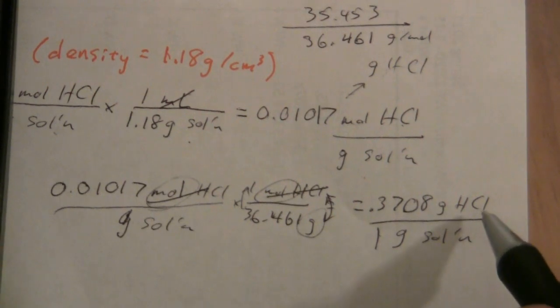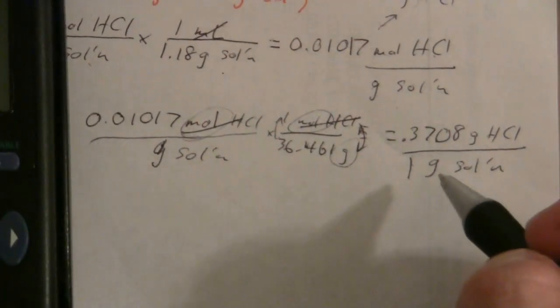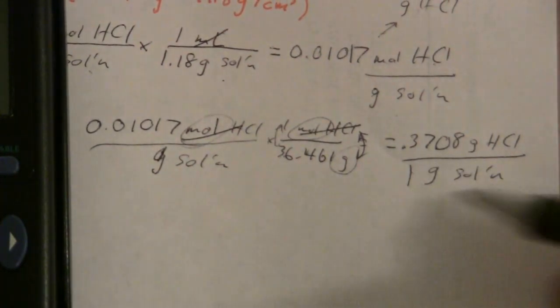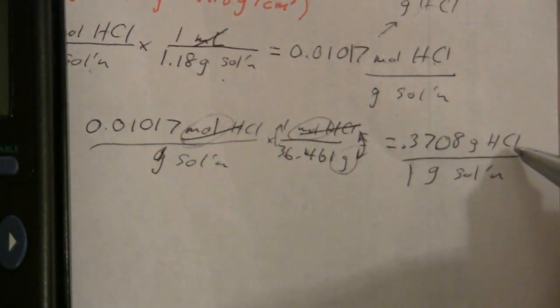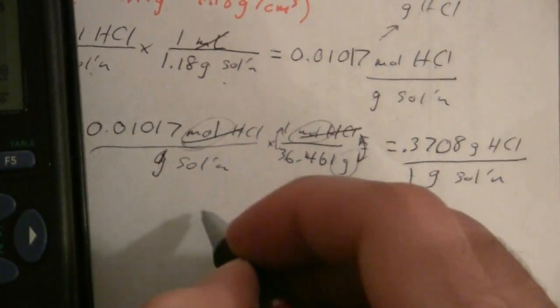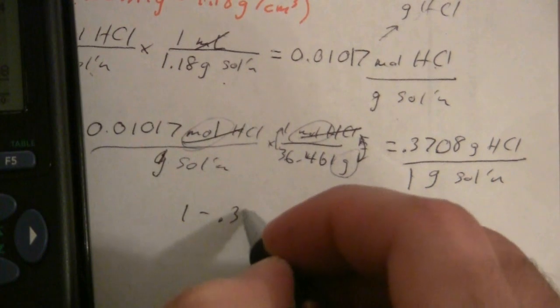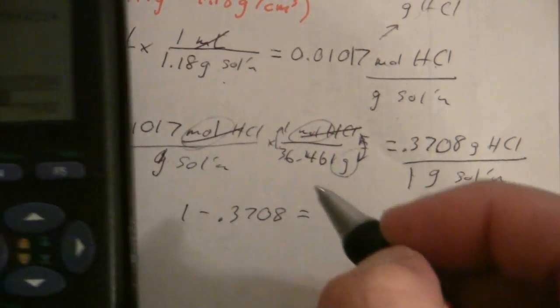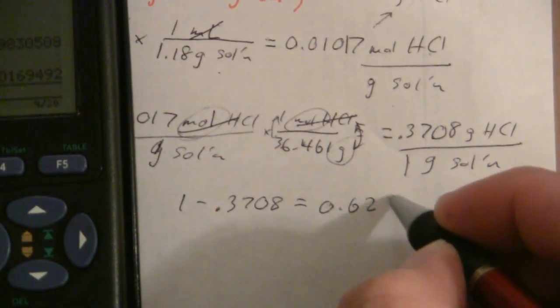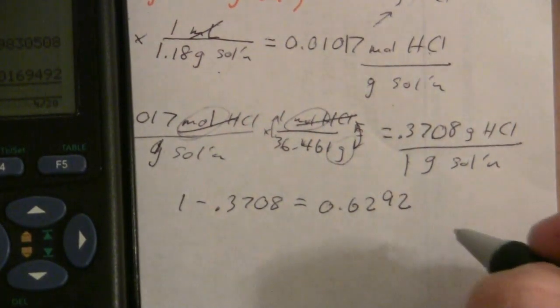Okay, so what that means is how much is water? Well if one gram is solution and this much is HCl, then the rest of it is water. So if I take one minus 0.3708, I get 0.6292.